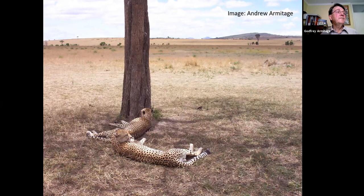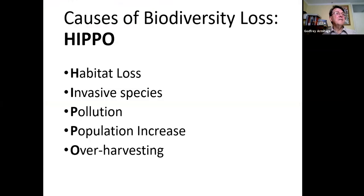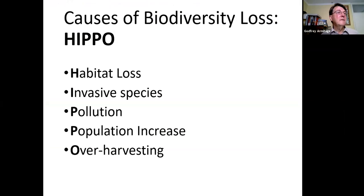So what causes this biodiversity loss? HIPPO is a useful acronym: Habitat loss, Invasive species, Pollution, Population increase, Over-harvesting. Population increase is the driver as we march towards 10 billion human inhabitants. But pollution in terms of overproduction of greenhouse gases — carbon dioxide, methane, nitrogen oxides, and refrigerant gases — results in perhaps the most rapidly growing and significant threat to the living world. All these are the things we study when we study the ecology of organisms and their environment.